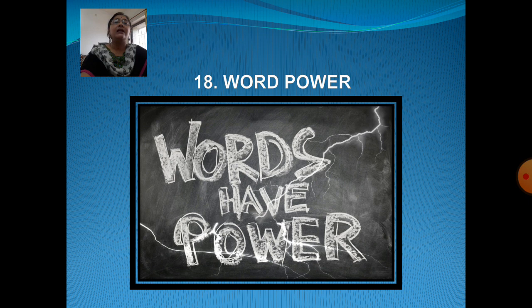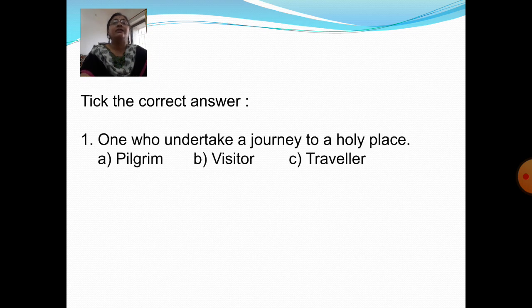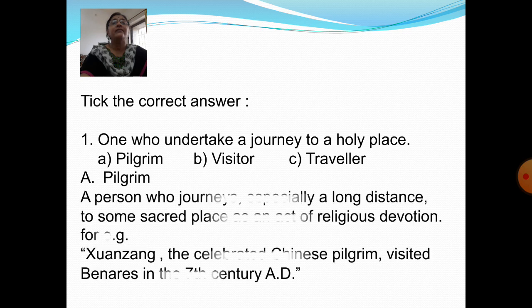Now let us start our new lesson, Lesson Number 18: Word Power. Pick the correct answer. Question 1: One who undertakes a journey to a holy place. Option A: Pilgrim. Option B: Visitor. Option C: Traveler. Answer is Option A: Pilgrim. Pilgrim means a person who journeys, especially a long distance, to some sacred place as an act of religious devotion. For example, Xuanzang, the celebrated Chinese pilgrim, visited Benares in the 7th century AD.